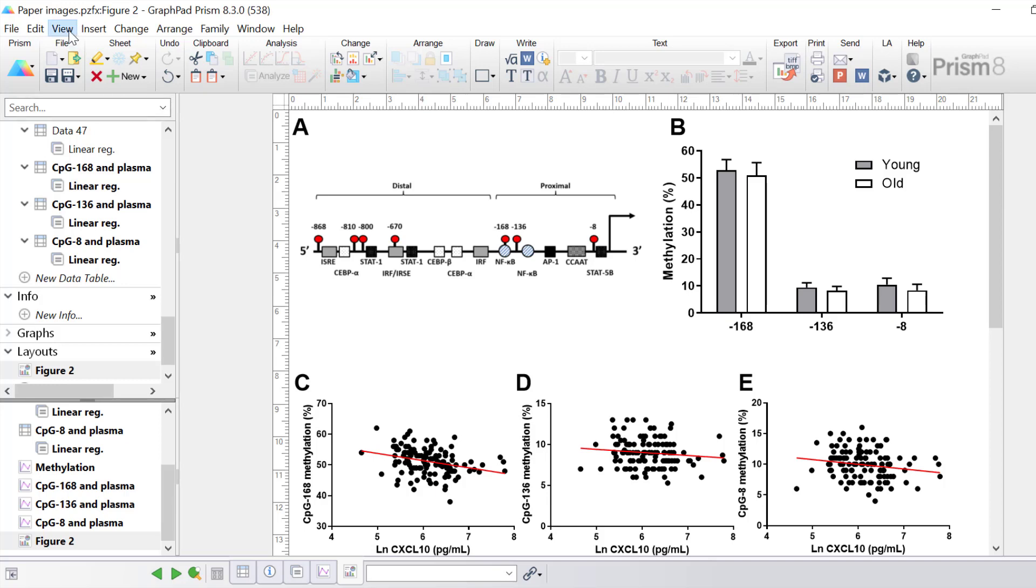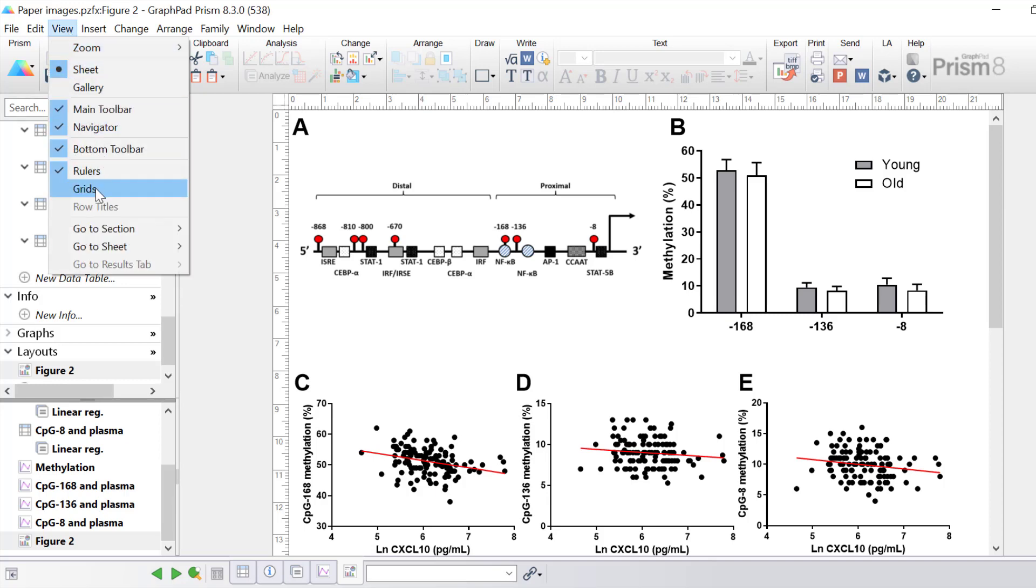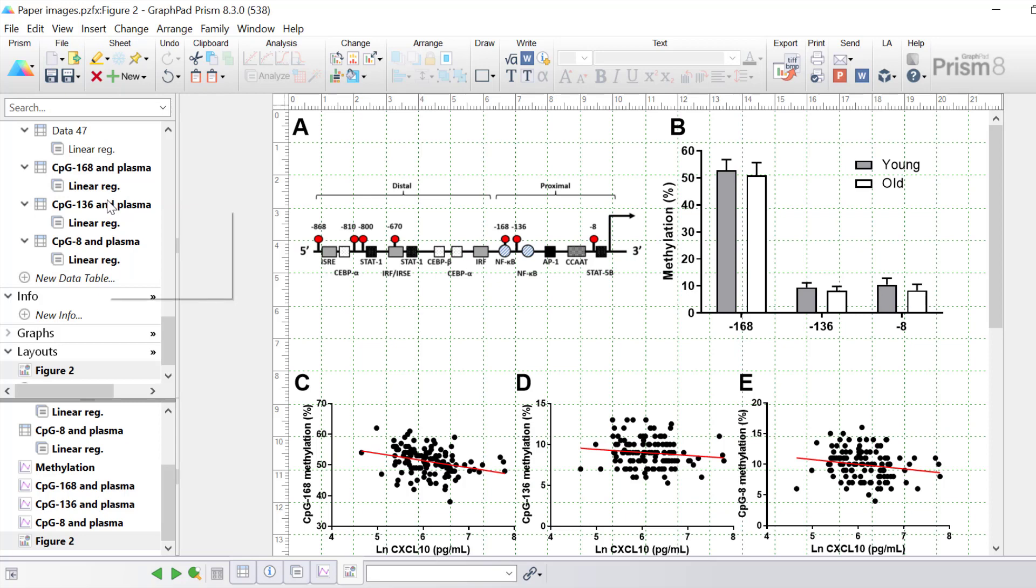If we want to view the grids we go to view grids and notice there's dotted grids in the background of the image. These can be very useful when you want to space the images out equally on the page. Notice that these grid lines and these rulers will not be present when you export the image. It's purely just for your reference.